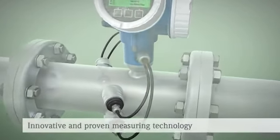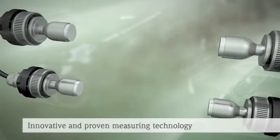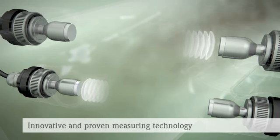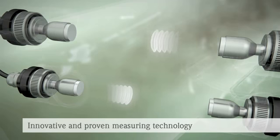Inside the ultrasonic flow meter, sensor pairs are fitted across from each other in the measuring tube. Each individual sensor can alternately transmit and receive an ultrasonic signal. In doing so, the transit times of these signals are measured along with the speed of sound.